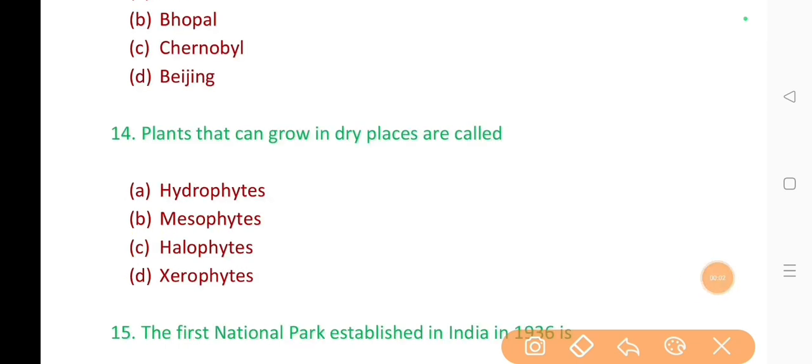14. Plants that can grow in dry places are called? The correct answer is option D. Xerophytes.